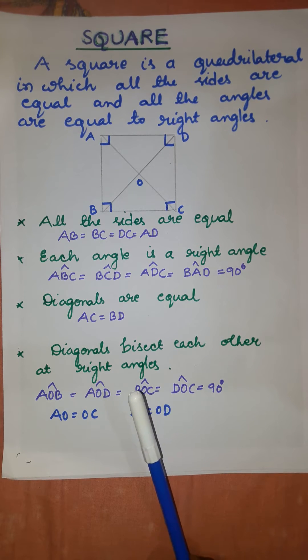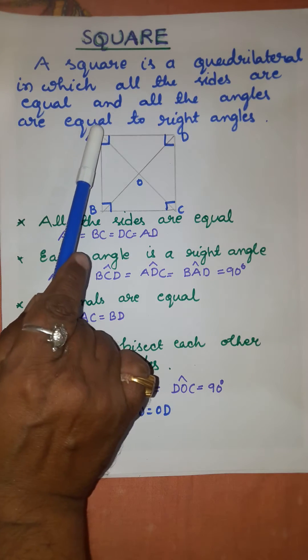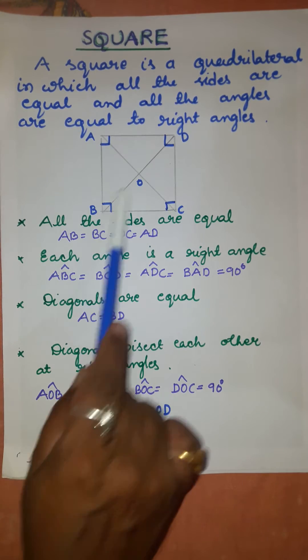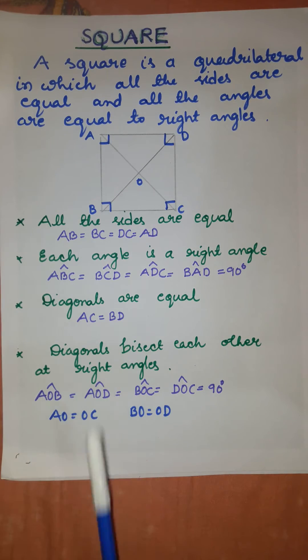Diagonals are equal. Diagonal AC is equal to diagonal BD, so AC is equal to BD.